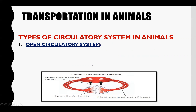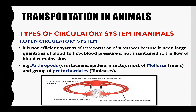The first type is called the open circulatory system. In the open circulatory system, the heart directly pumps blood into the spaces between the tissues, and the blood directly communicates with the cells so organs take nutrients directly from the blood. This system is not very efficient — a large quantity of blood flow is required, blood pressure cannot be maintained, and blood flow is slow. Examples include arthropods such as crustaceans, insects, and spiders. Pre-chordates, which are closely related to chordates, and animals with a notochord also have an open circulatory system.